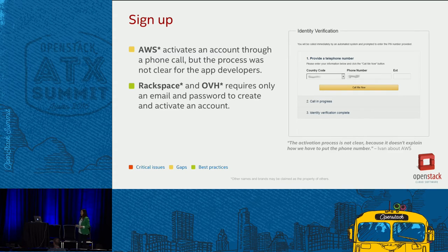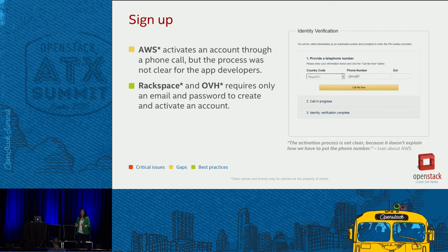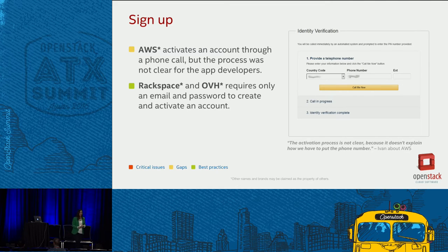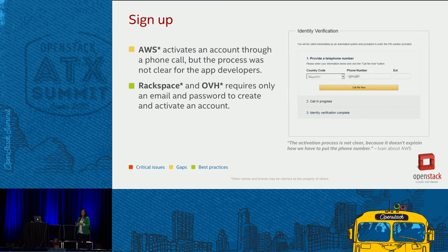In the sign-up stage, developers create and activate their accounts. For Rackspace and OVH, this was very easy because they only require an email and a password. For Azure and Google Cloud, you need a proprietary account — a Microsoft account or a Google account — so it's an additional step. AWS was the tricky one because activation is through a phone call, and the process for entering your phone number is not very clear. The developers never received the phone call and ended up creating a support ticket to activate the account on Amazon.